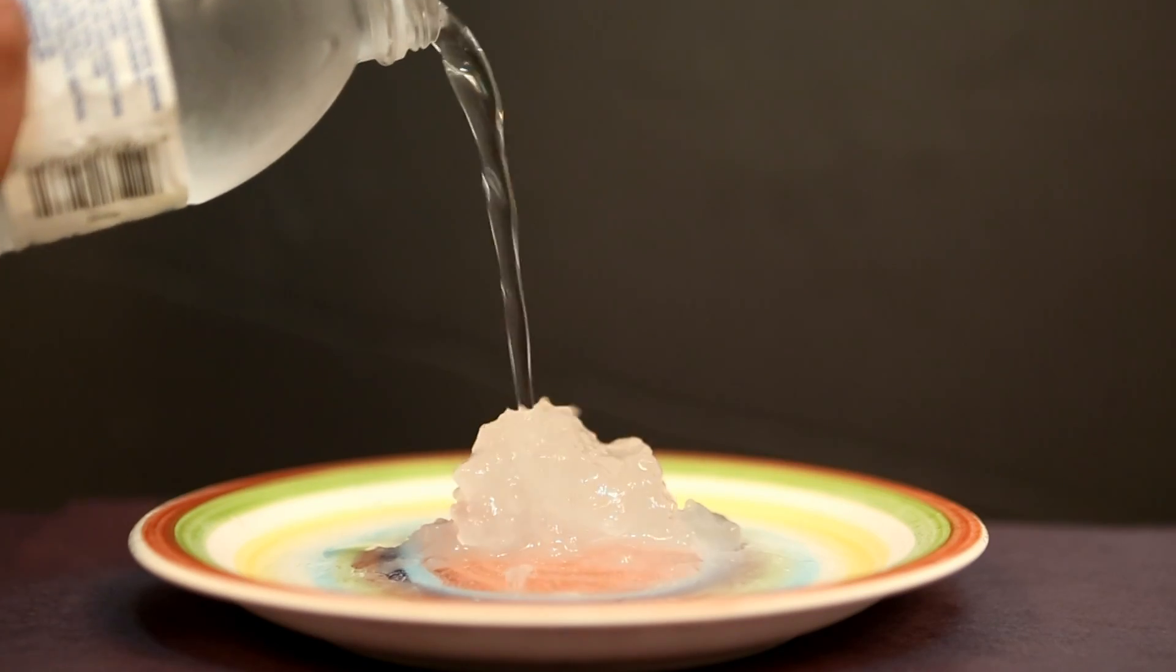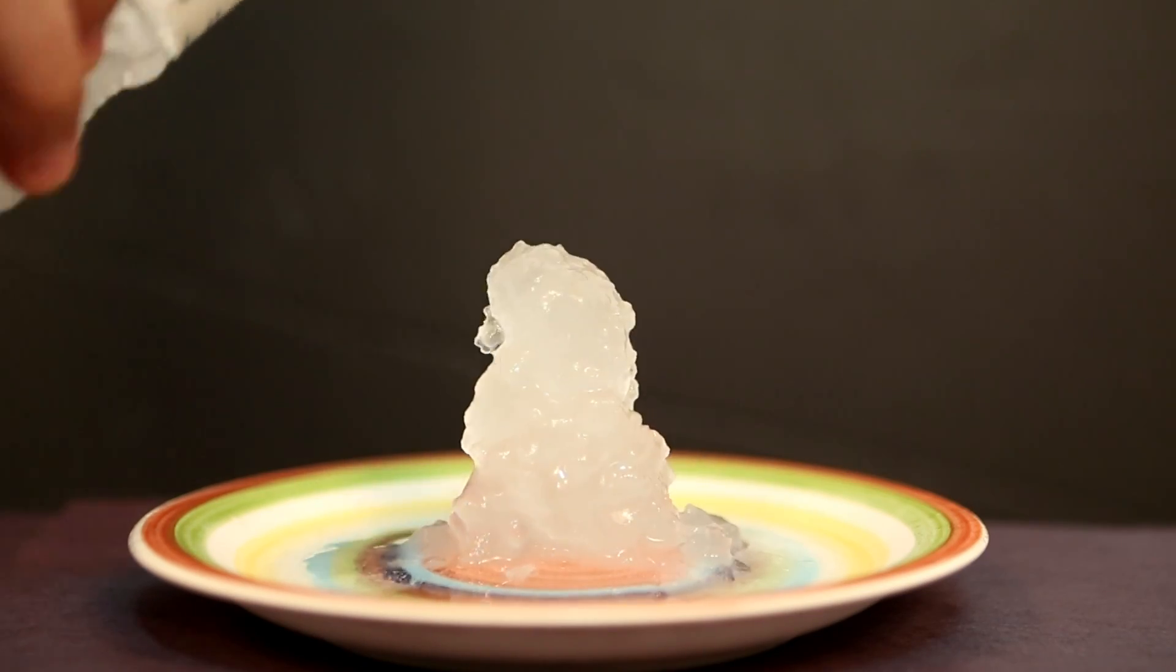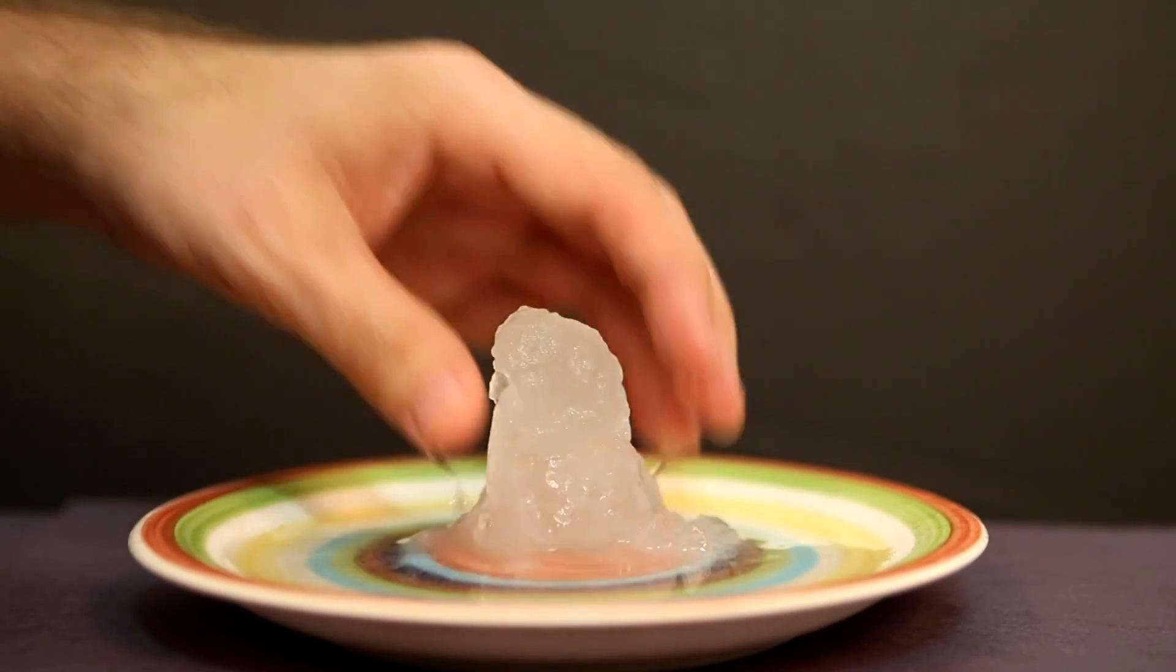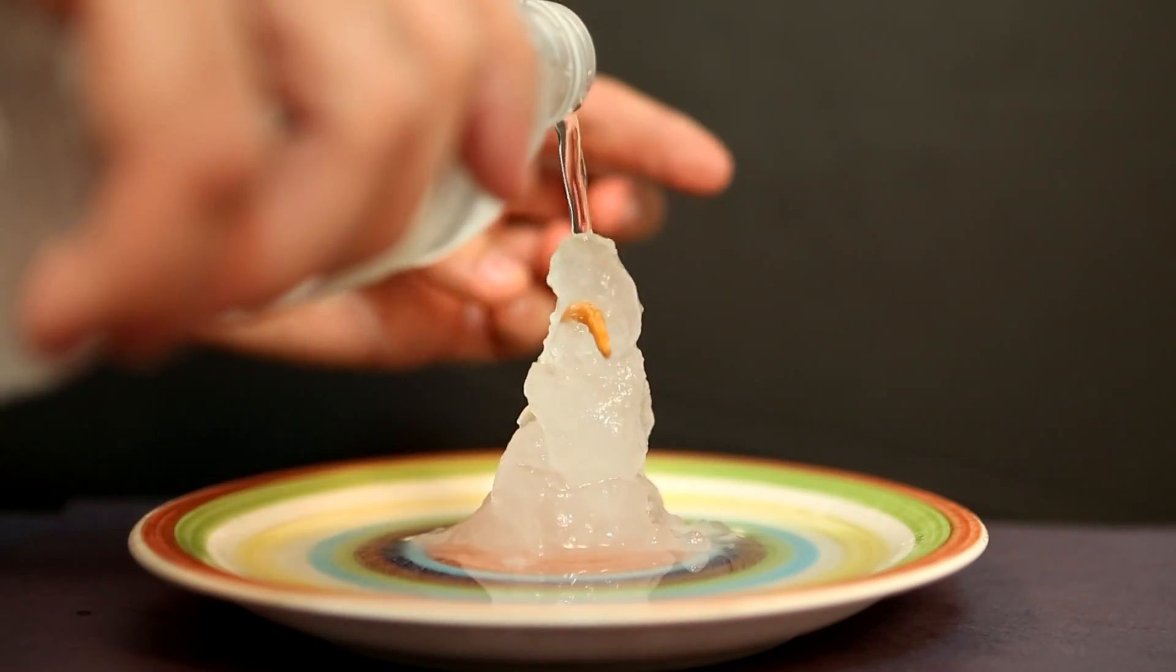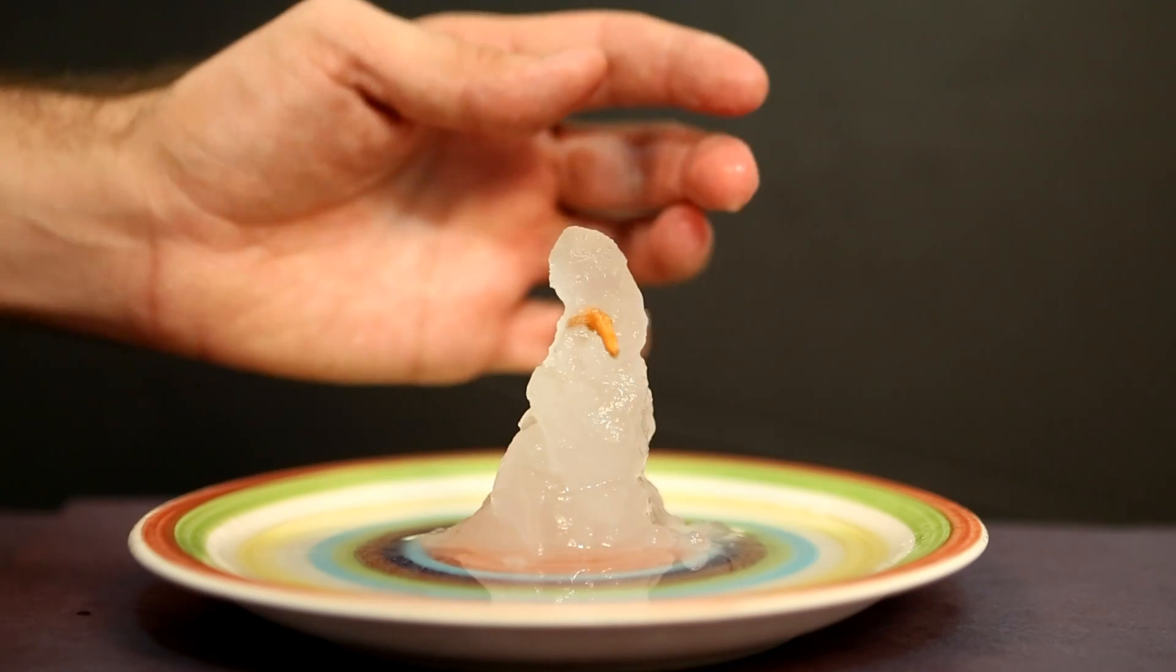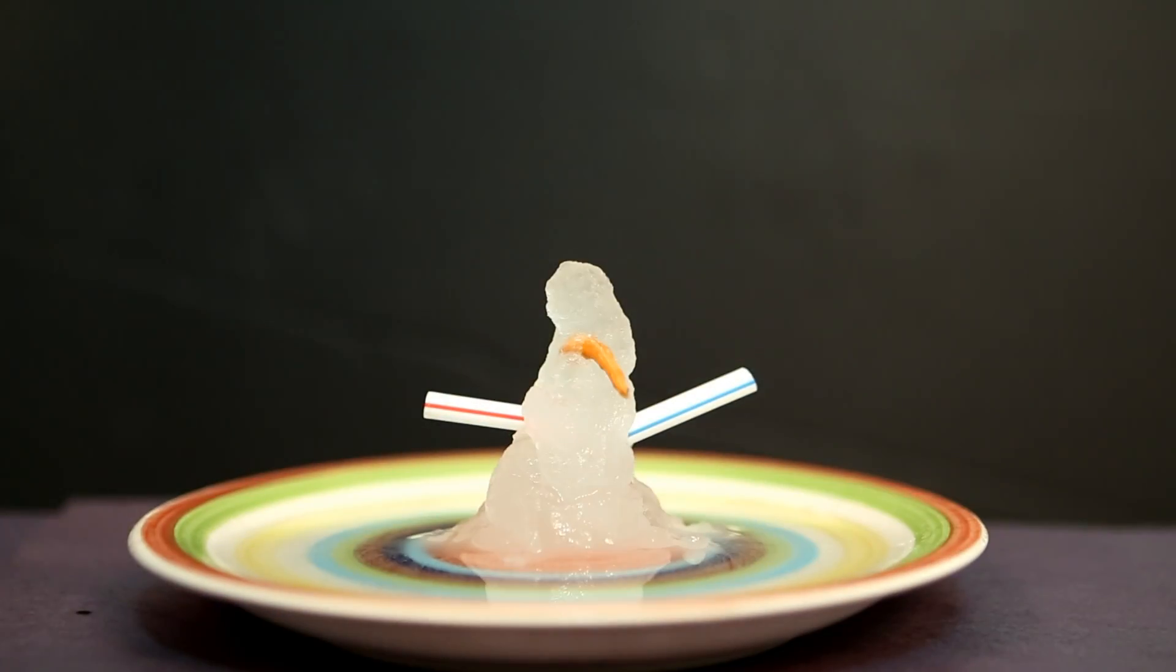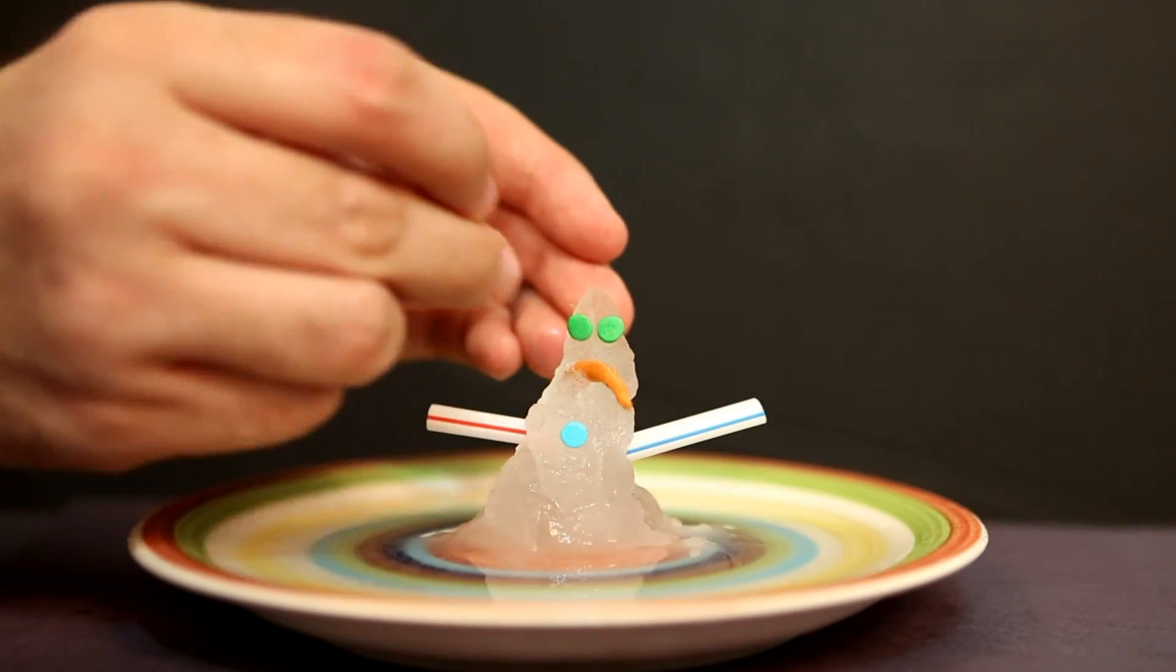Now, just pour the super cold water directly on the icy plate to create instant snow. Mold it with your fingers into a perfect snowman. Then, place the carrot on the figure and shower it with water to freeze into place. Add the arms, eyes, buttons. You have a winner!